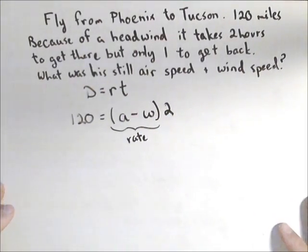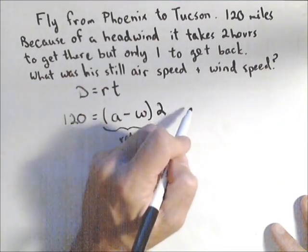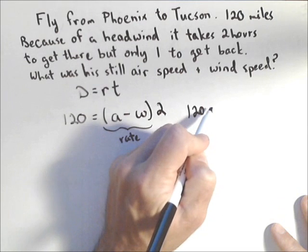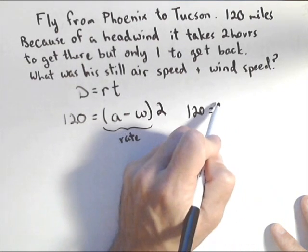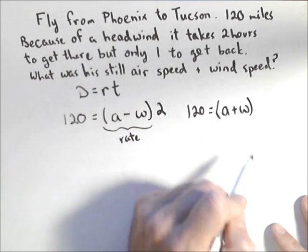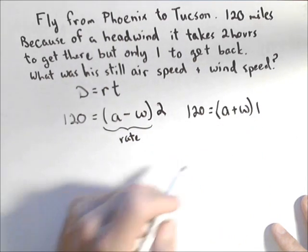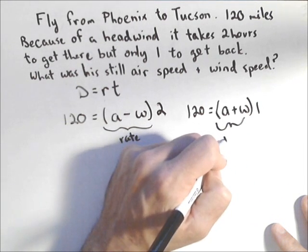We're going to do something real similar coming back. We know it was still 120 miles, but now the wind speed is going with him, so it's going to add to his airspeed, and that only took one hour. So here, A plus W is his rate.